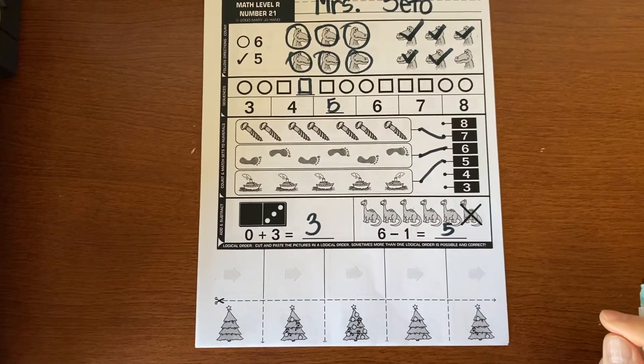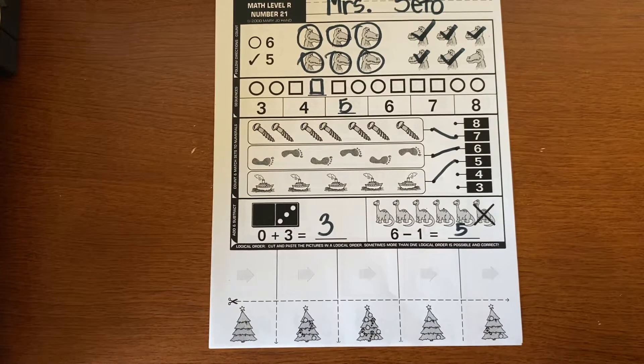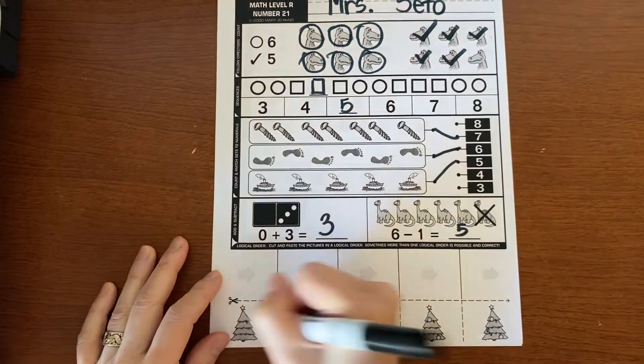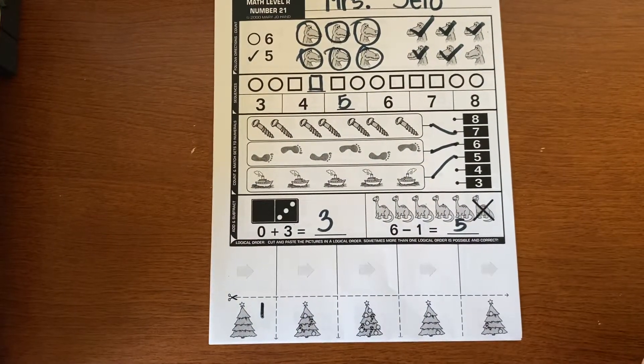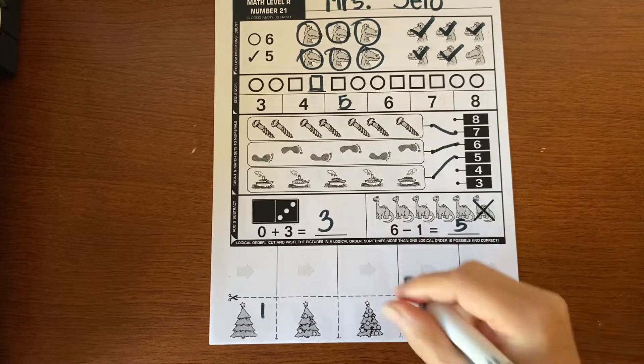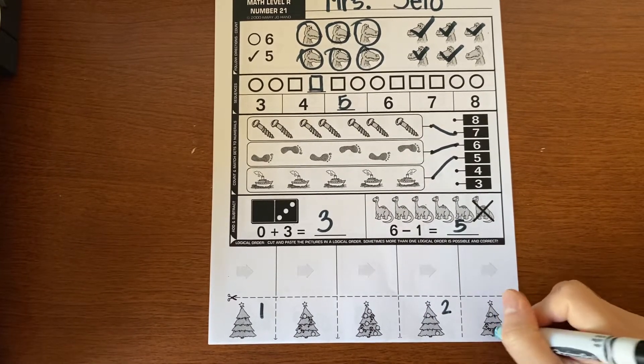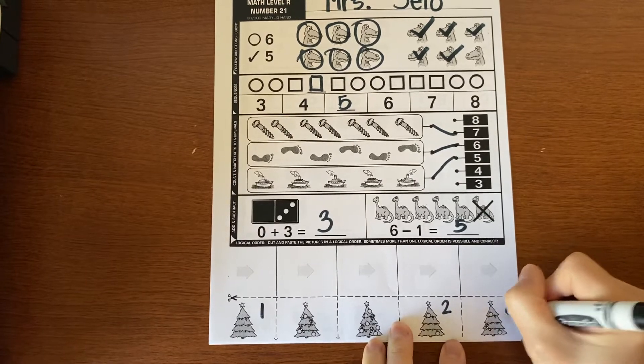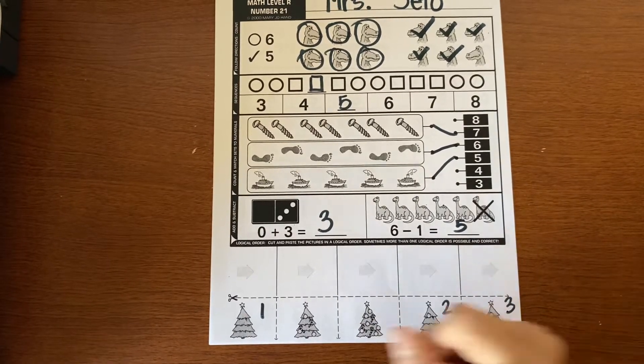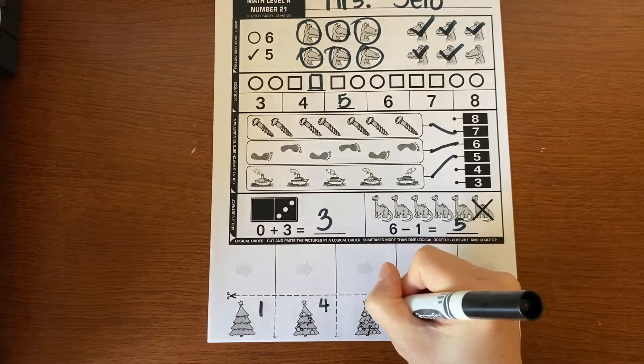Oh, it's a Christmas tree. So we're decorating the Christmas tree. So the beginning of the Christmas tree just has a star and then you start putting a few ornaments on it. Which one has very few? Probably this one. Which one do you think next? Yeah, this one because they added a candy cane and then this one and then the one that's all done is the one in the middle.